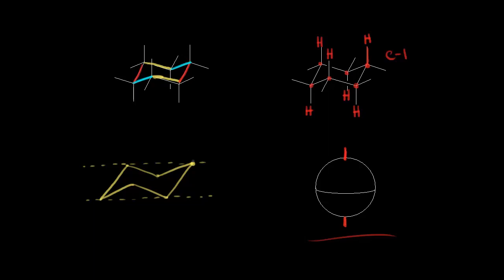Here is carbon one — we draw a line straight up and put in a hydrogen. We go to carbon two and draw a line straight down and put in the hydrogen. Carbon three, we draw a line straight up and put in the hydrogen. Carbon four, we draw a line straight down and put in the hydrogen. Carbon five would be up, so we put in that hydrogen. And finally carbon six would be down for our hydrogen.